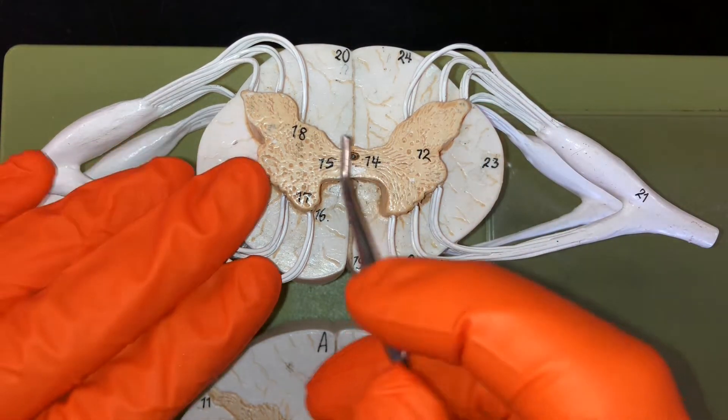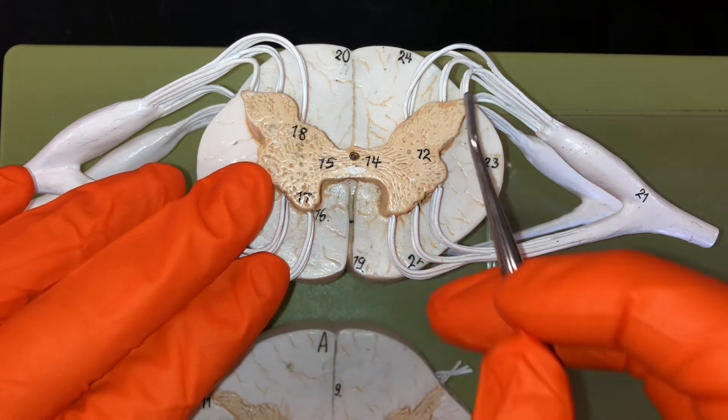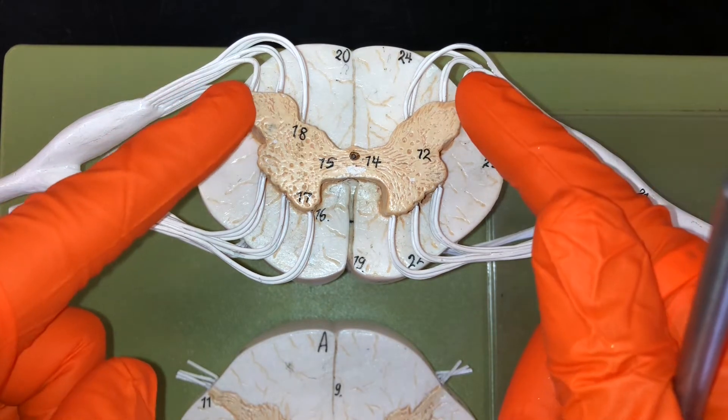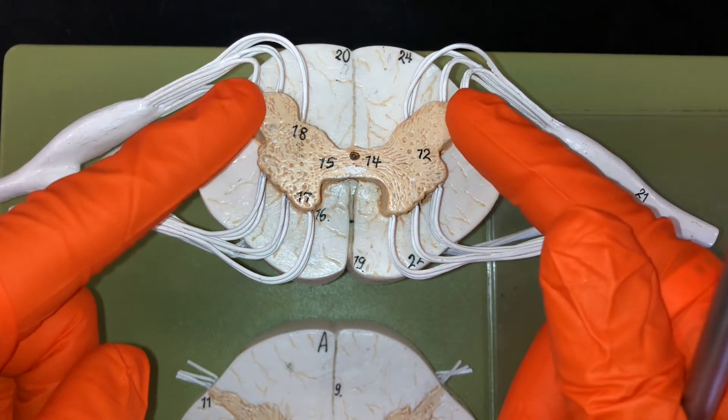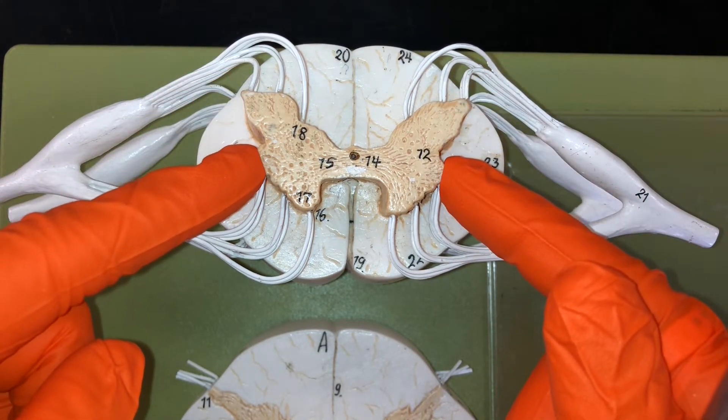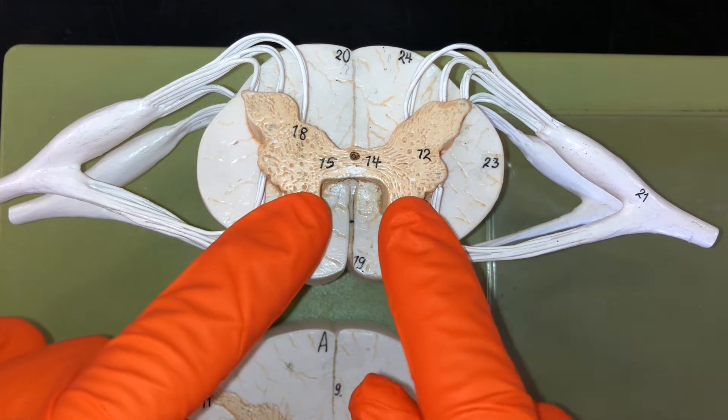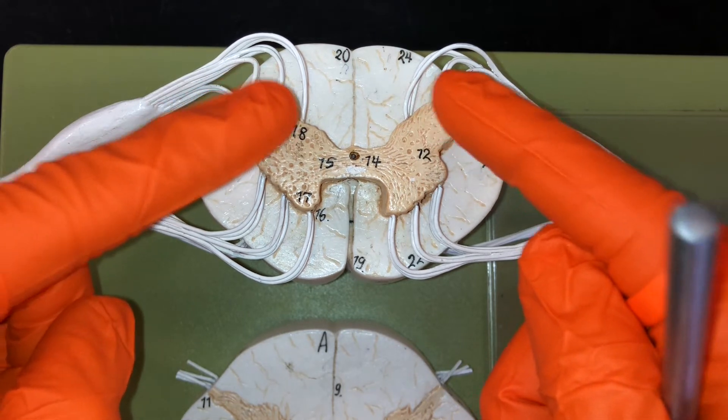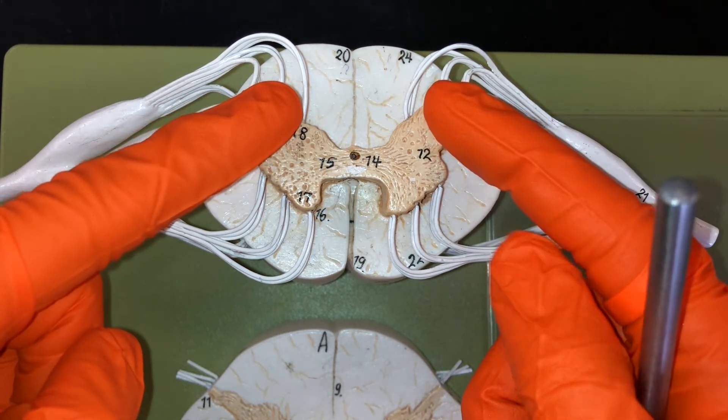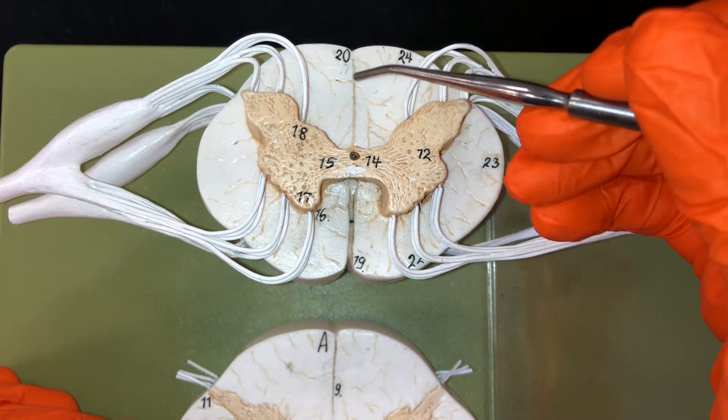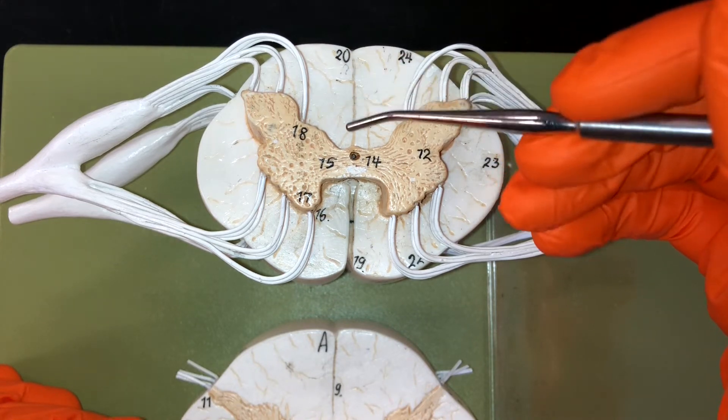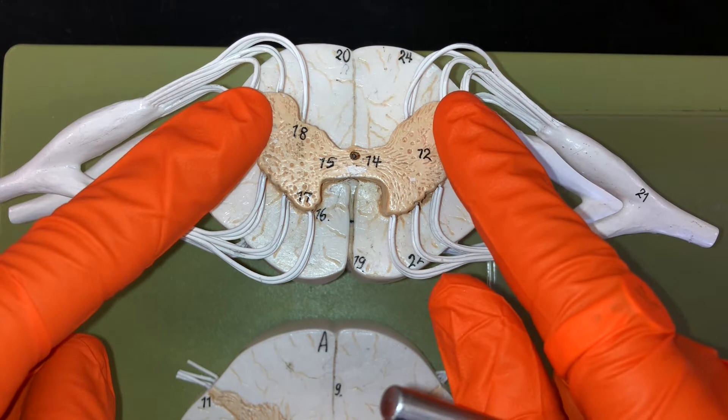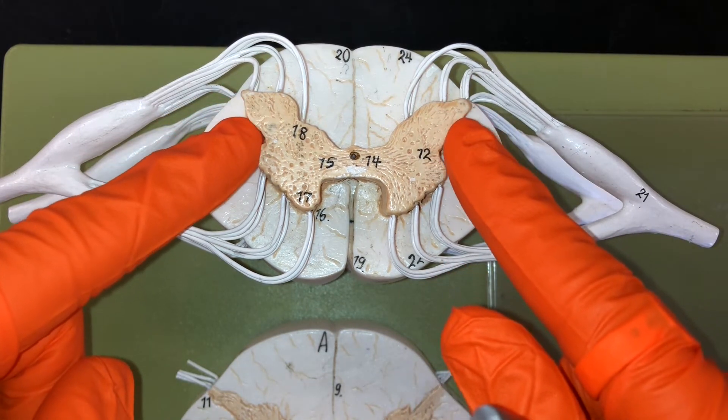Let's take a closer look at the gray matter here. These are divided into areas we call horns. So these will be the posterior horns, these are the lateral horns, and these are the anterior horns. The posterior horns, which are right here, will contain the dendrites and cell bodies of interneurons.